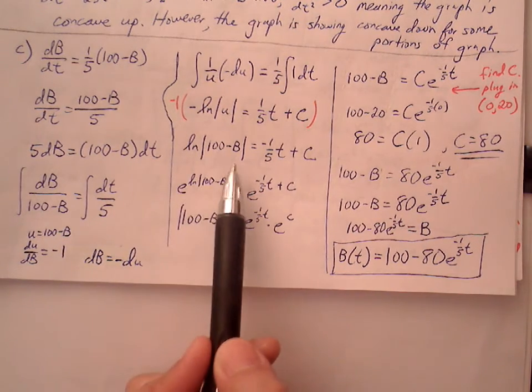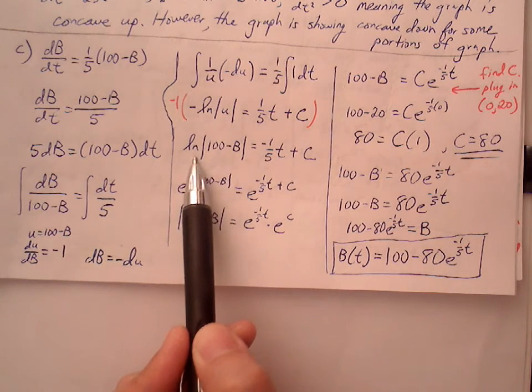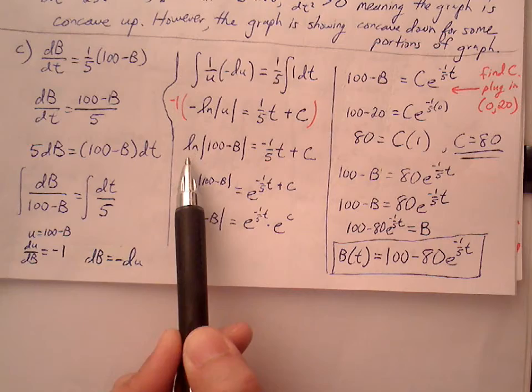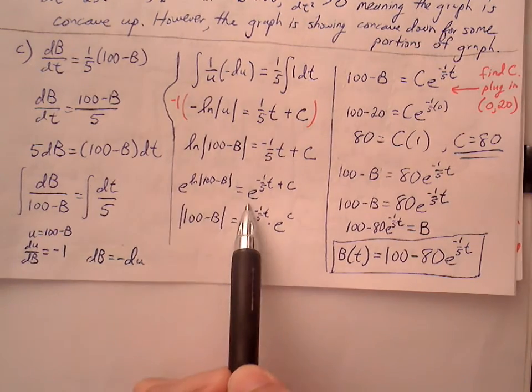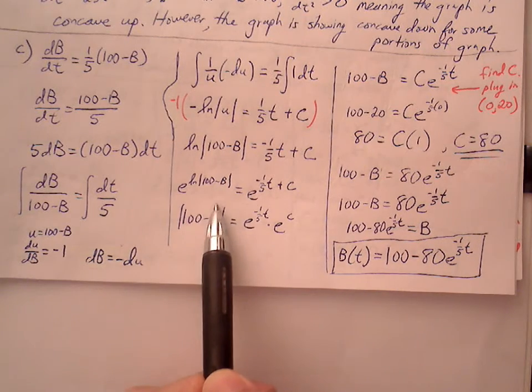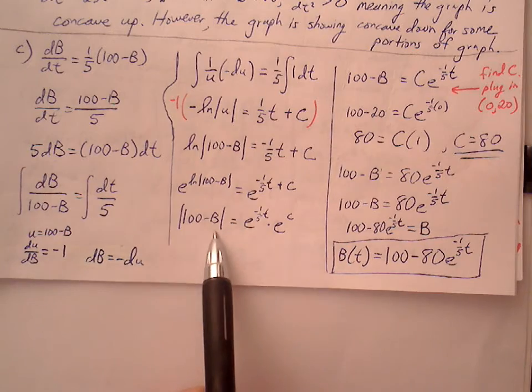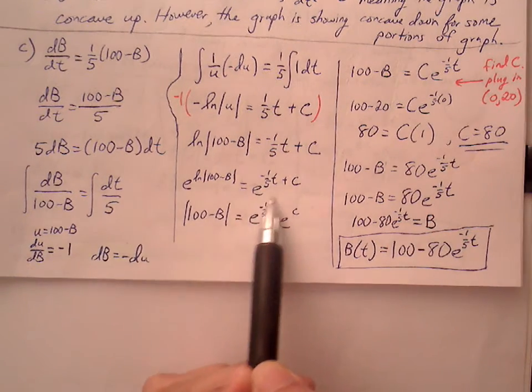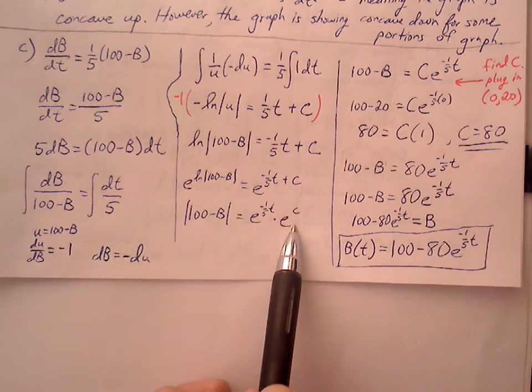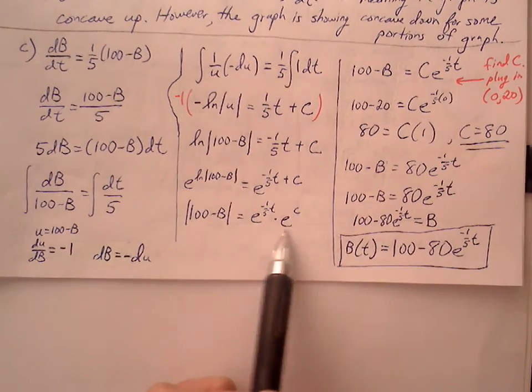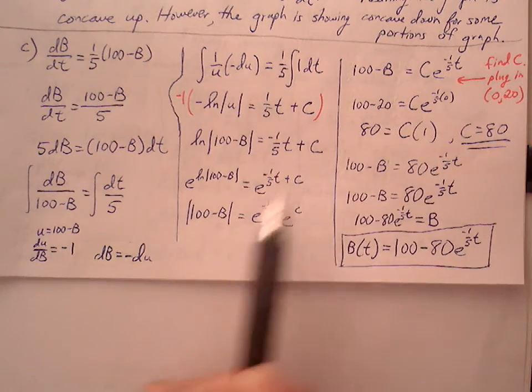Now I want to solve for B, but to solve for B I want to get this (100 - B) out from under this natural log function. The way I can get rid of natural log is to raise both sides with base e. Once I raise both sides with base e, the left side will just give me absolute value of (100 - B). The right side I can expand this into e^(-1/5 t) times e^C. Now e^C is just a constant, so I can represent this as times C and push that C out in front as a coefficient.